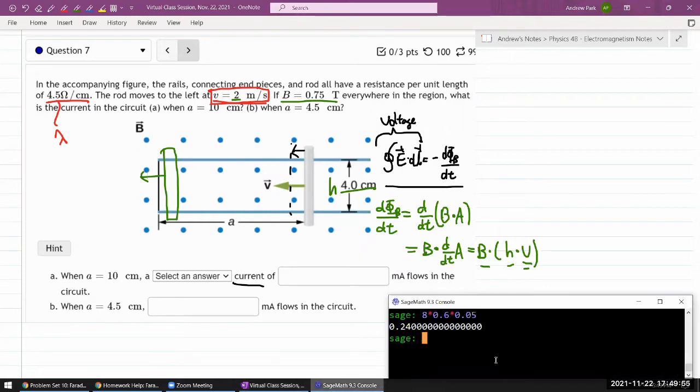So my voltage should be magnetic field, 0.75 tesla, times the height in the basic SI unit, so that should be 0.04 meter, times speed in basic SI unit, 2 meter per second. So that's my voltage, 0.06, and what I now need to figure out is the resistance. That seems super small, but must be right.